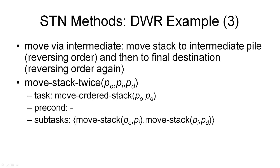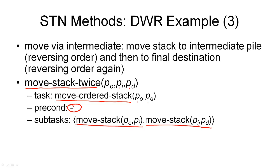The final example is moving a stack via an intermediate pile to maintain the original order. The first move reverses the order, and the second move reverses it again, restoring the original order. The method 'move stack twice' takes three parameters: the origin pile, the intermediate pile, and the destination pile. It accomplishes the task 'move ordered stack' from PO to PD, has no preconditions, and has a totally ordered network with two subtasks: move the stack from origin to intermediate, then from intermediate to destination.